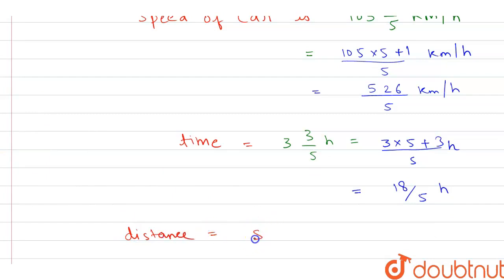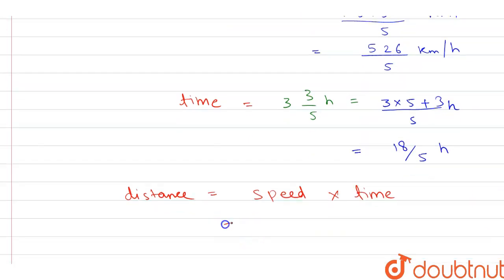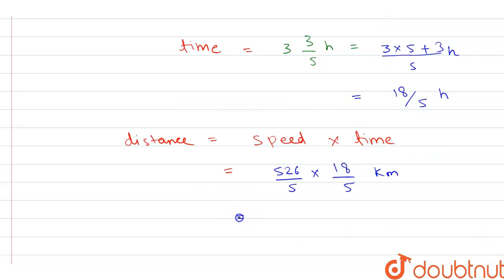Distance equals speed into time. So if you put the values, this will be equal to 526 upon 5 into 18 by 5 kilometers. And if we simplify it, this will become 9468 upon 25 kilometers. This will be equal to 378 whole 18 by 25 kilometers. Thank you.